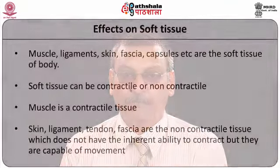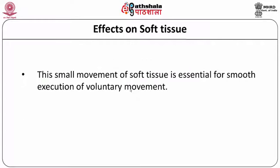On the other hand, the skin, ligament, tendon, and capsules do not have the inherent property of contraction. Therefore, they are called non-contractile tissue, and the little amount of movement present in the soft tissue is necessary for smooth functioning of the locomotor system. Soft tissues are composed of minute collagen fibers that are loosely bound and they are suspended over an amorphous ground substance called matrix. During voluntary movement, there occurs movement of soft tissue. Whenever a force is applied to soft tissue, minute movements of constituent collagen fibers also takes place. This small movement of soft tissue is essential for smooth execution of voluntary movement.